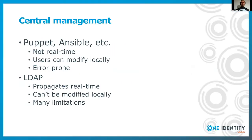Once you have more than a single machine, you most likely want to do some central management of your configuration. Puppet, Ansible, Chef, Salt — whatever you want to use supports sudo. The problem is that changes are not done in real time, and users can modify configuration files locally. It can also be error-prone if you configure something centrally that is not yet supported by the version of sudo you have locally.